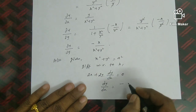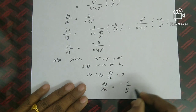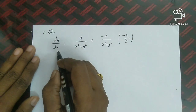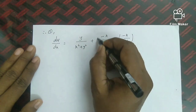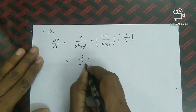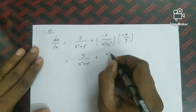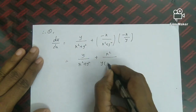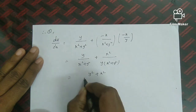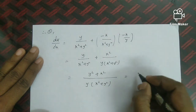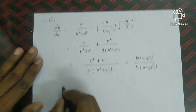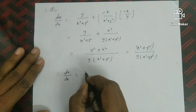Back to equation 1, substituting all values: du/dx = y/(x²+y²) + [−x/(x²+y²)]·(−x/y). The second term becomes x²/(y·(x²+y²)). Taking LCM as y·(x²+y²): numerator becomes y² + x². So du/dx = (x²+y²)/(y·(x²+y²)) = 1/y.